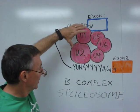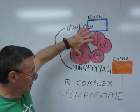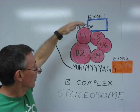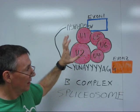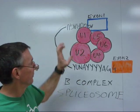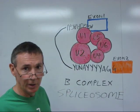In this complex now, it goes through some rearrangements. And ultimately, the U1 snRNP and the U4 snRNP are going to leave, leaving behind the active functional complex known as the C complex.